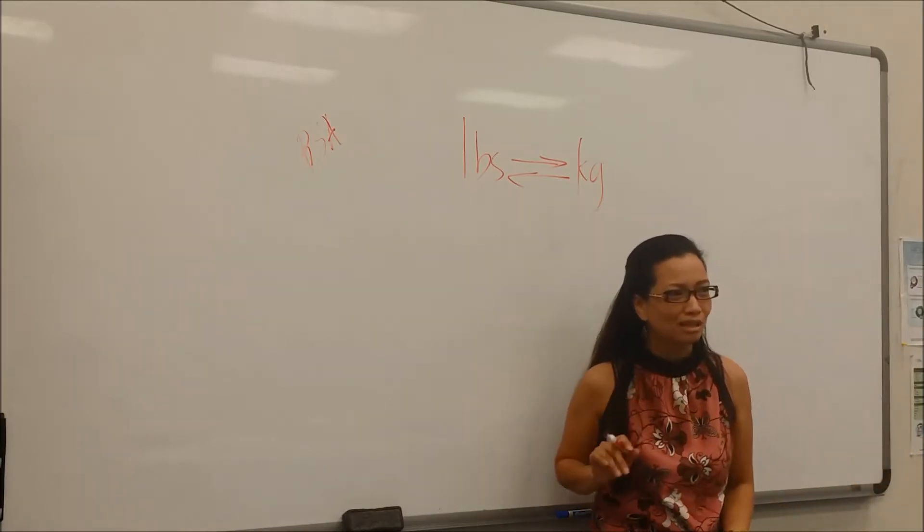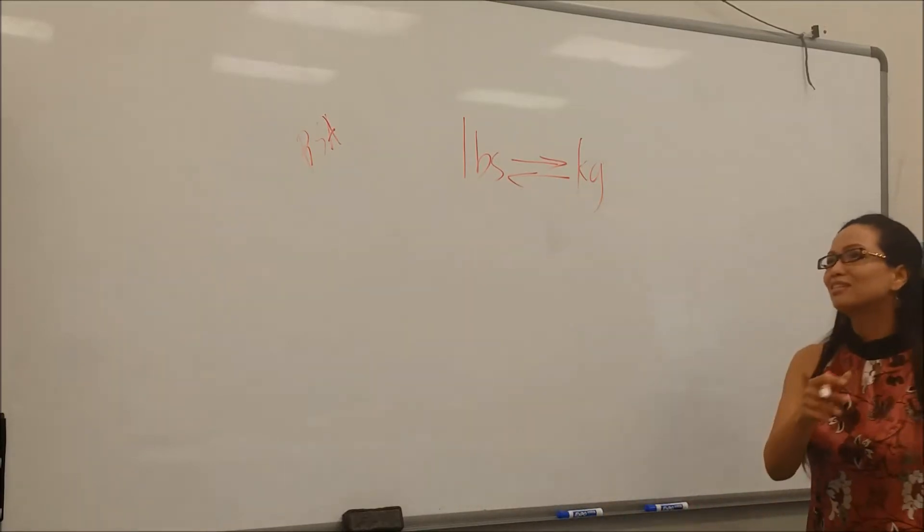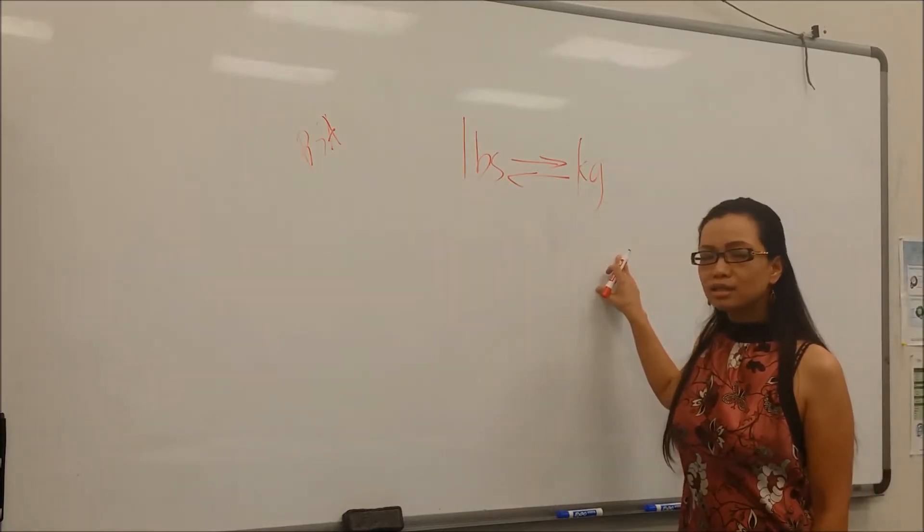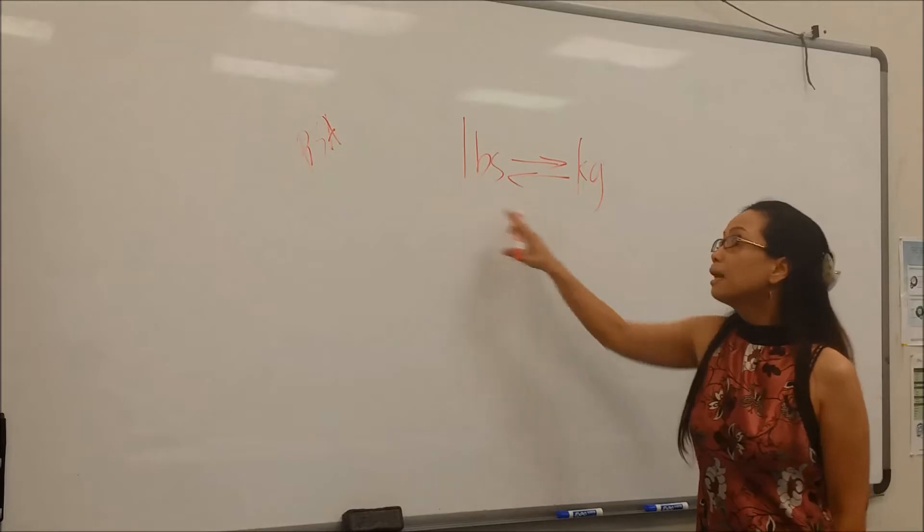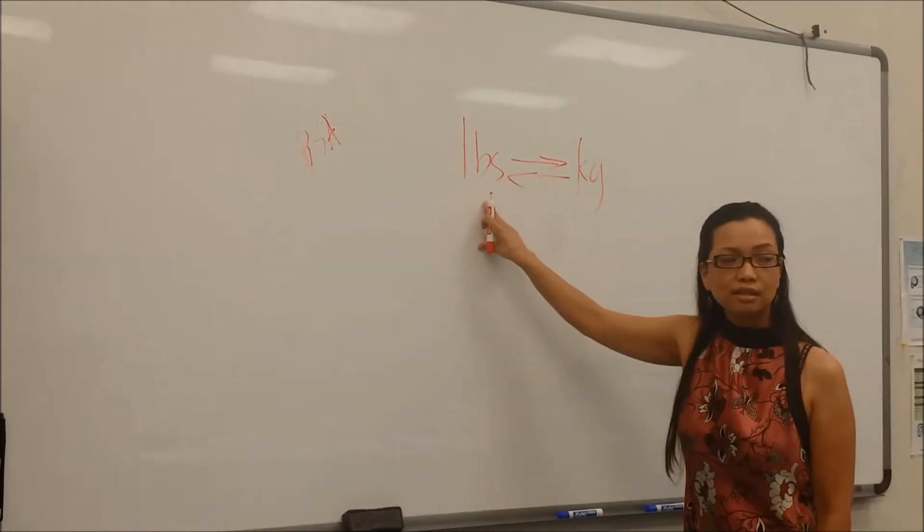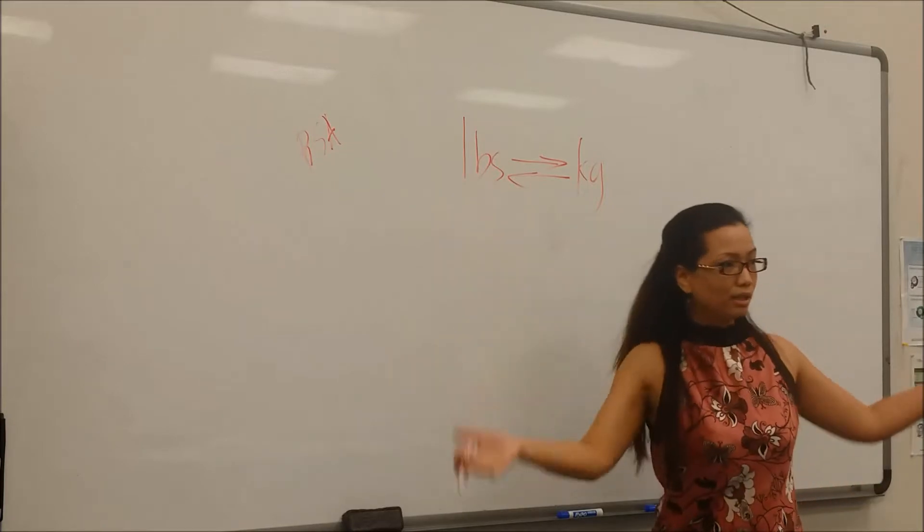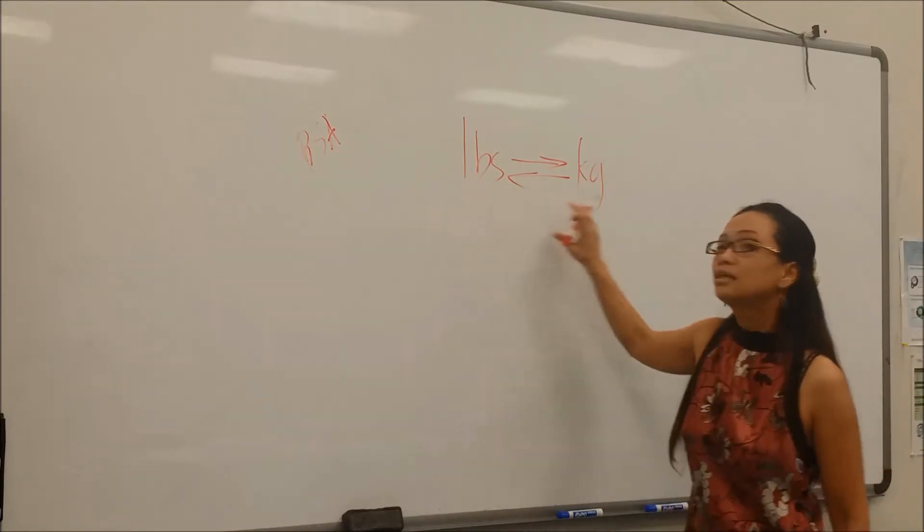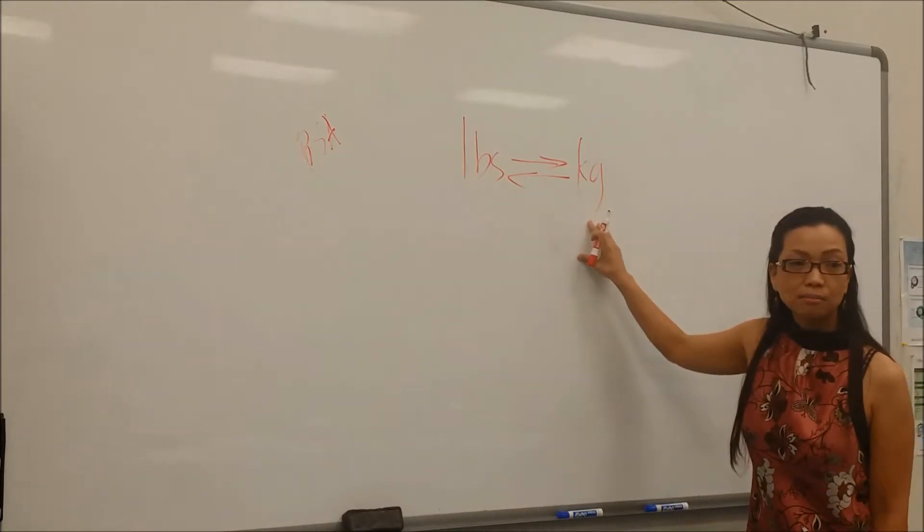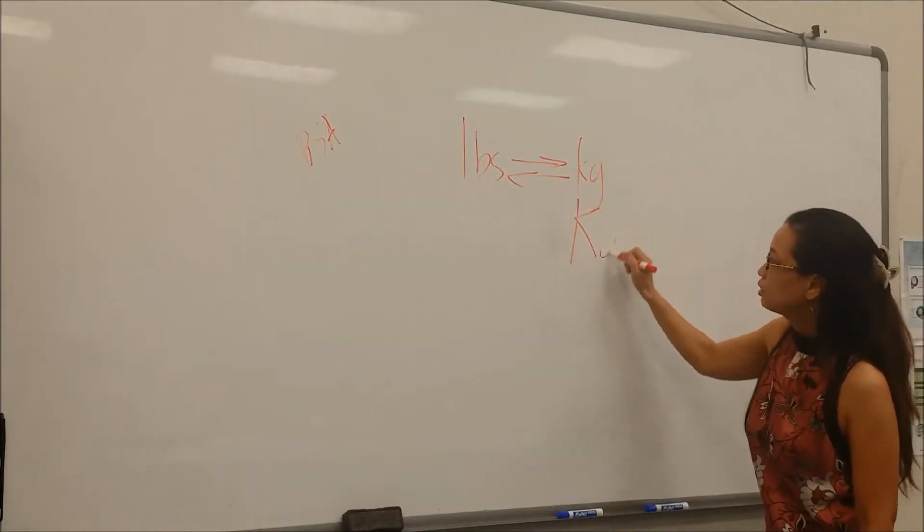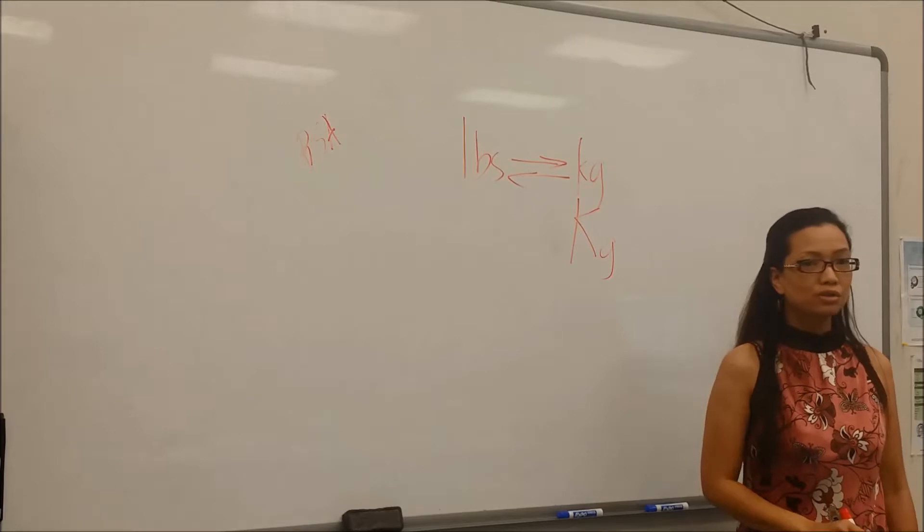Pounds to kilograms—which one is household? Pounds, lbs, because it's libras. You know the weighing scale, libras. Kilograms is metric. It can be capital K and then lowercase g. What's your conversion?